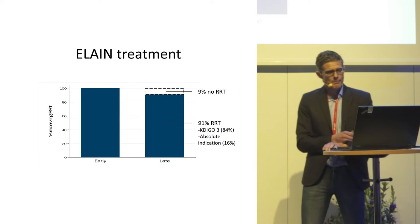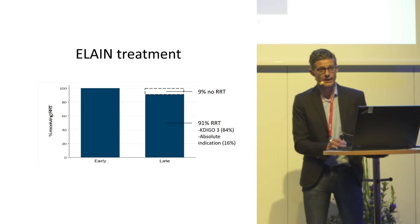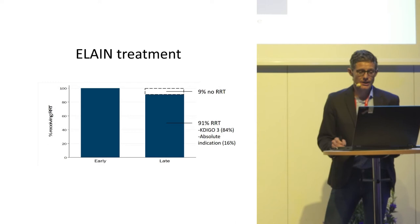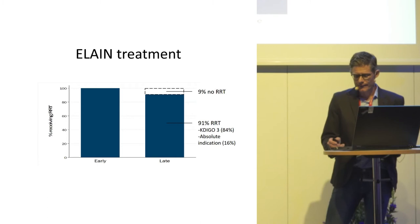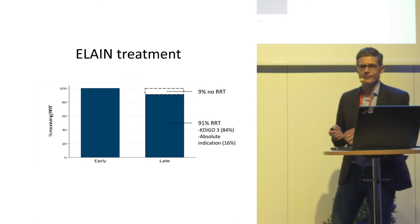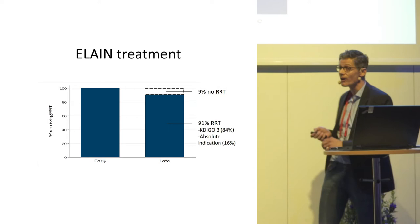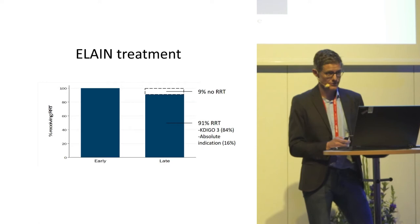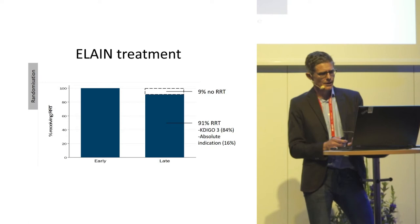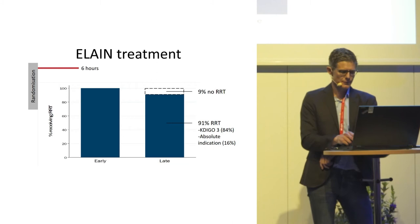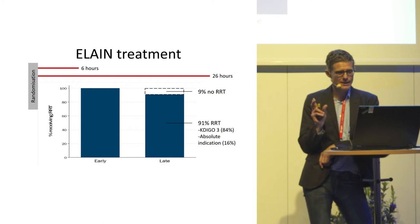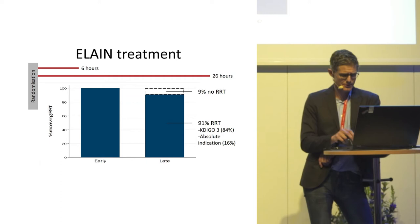The results from the ELAIN trial are very different from the AKIKI trial. All patients in the early group received RRT, and most patients in the delayed group as well. The indication for starting RRT in the late group was mainly progression to KDIGO stage 3, rather than absolute indications. Time to treatment was six hours in the early group and 26 hours in the late group — just a 20-hour difference between the two groups.